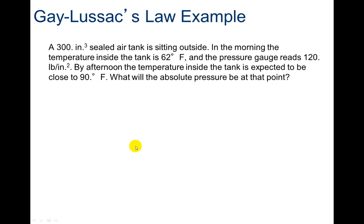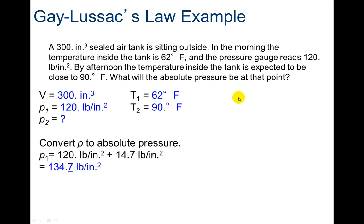Here's an example. A 300-inch cubed sealed air tank is sitting outside. Notice it says sealed air tank, so that means my volume is not going to change. In the morning, the temperature inside the tank is 62 degrees Fahrenheit and the pressure gauge reads 120 PSIs. Notice the pressure gauge, so that means we're going to have to change that to an absolute. By afternoon, the temperature inside the tank is expected to be close to 90 degrees Fahrenheit. What will the absolute pressure be at that point? Here's my knowns. This pressure 1 I'm going to have to convert by adding 14.7. Again, we're assuming a standard pressure, not actually taking the atmospheric pressure at that exact time.